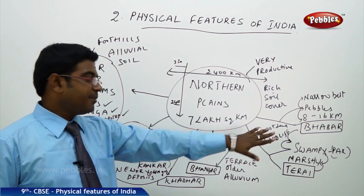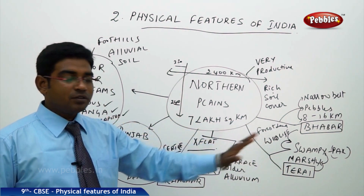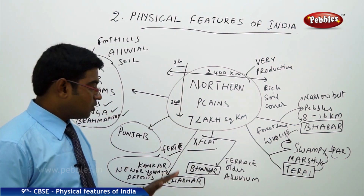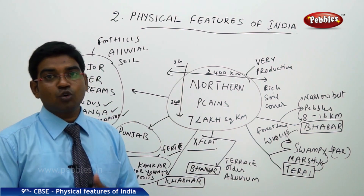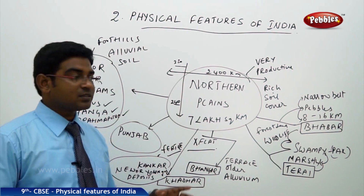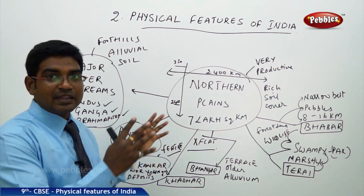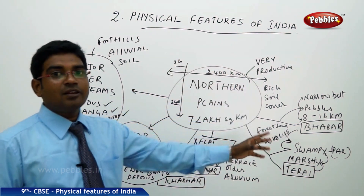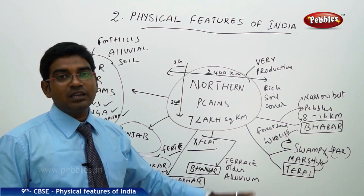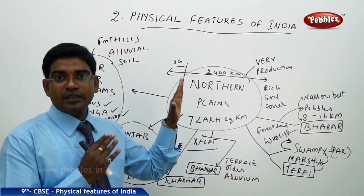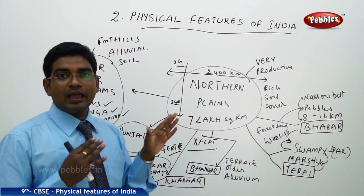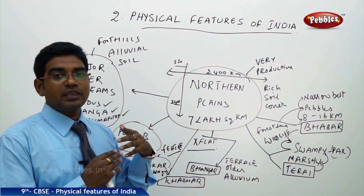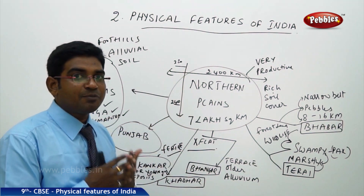So the Northern Plains, except the narrow Bhabar belt, has its entire cover with a huge variety of fertile plains. Basically, it is located on the south of the Himalayan mountains, and the alluvial soil deposited by the Himalayan rivers got deposited here.